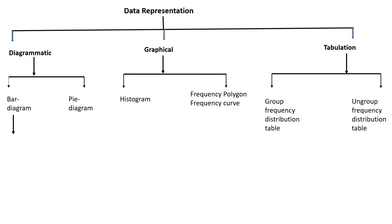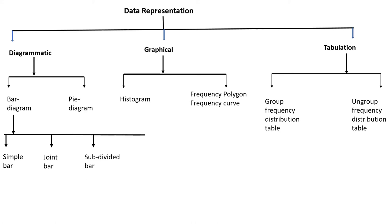For this year and this chapter, you will have bar diagram, and bar diagram you have learned four types. One is simple bar graph, done in your 7th standard. Then joint bar graph, also learned in your previous standard. In 8th standard, you learned about subdivided bar graph and percentage bar graph. Now, in our exercise 7.1, we will be doing subdivided bar graph and percentage bar graph, which you have already learned in your 8th standard.